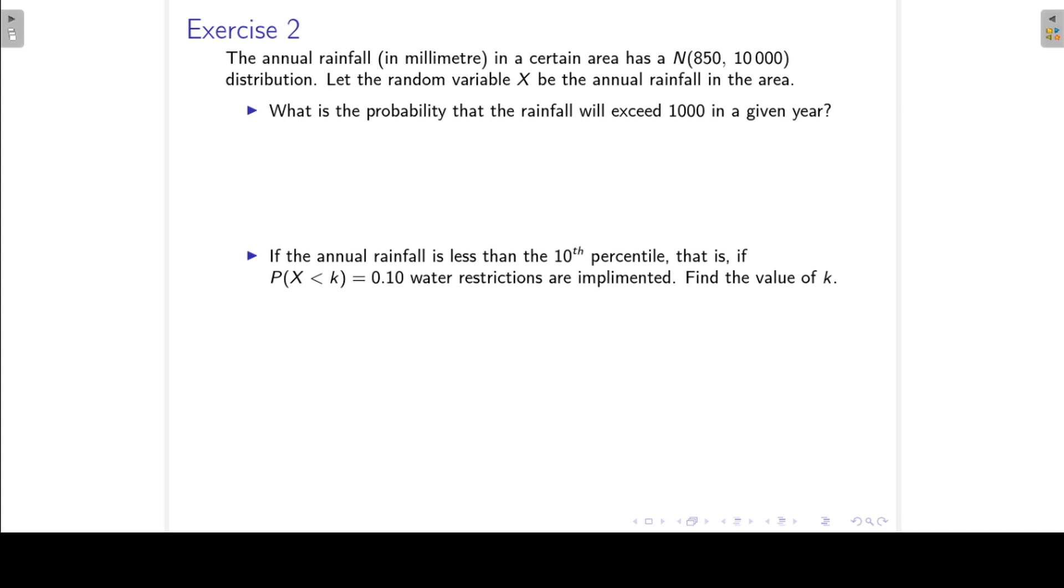So we want to find the probability that X exceeds 1,000. So again, we standardize. And we divide by the standard deviation, which is the square root of 10,000.